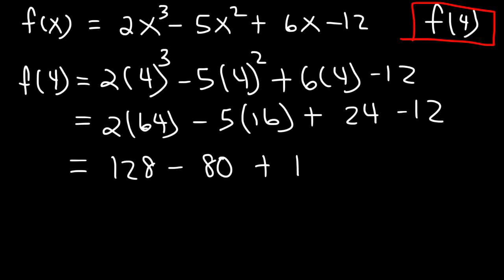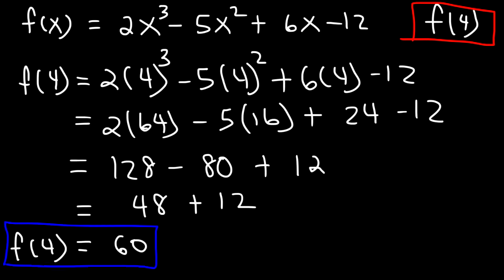And 24 minus 12 is 12. 128 minus 80, that's going to be 48 because 12 minus 8 is 4. And 8 minus 0 is 8. And 48 plus 12 is 60. So therefore, f of 4 is equal to 60. So now that we have that, let's use synthetic division to confirm this answer.